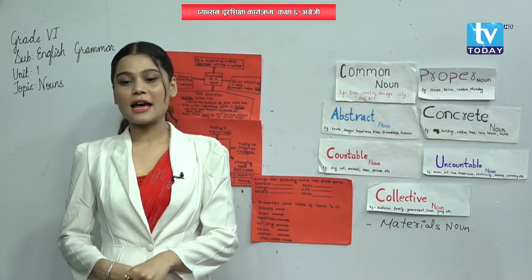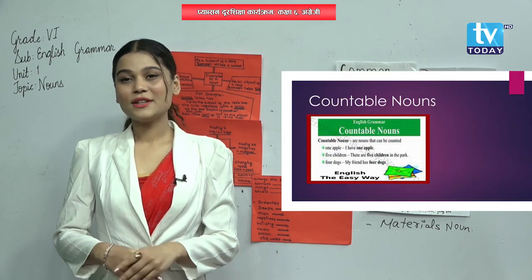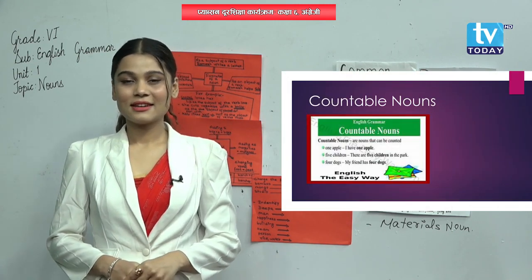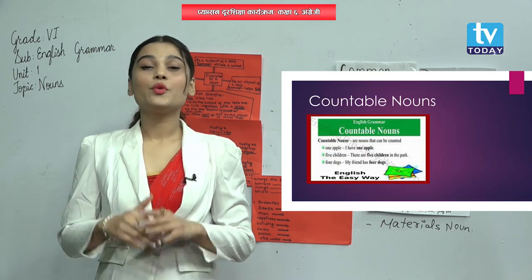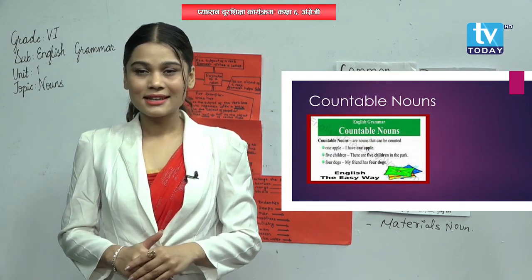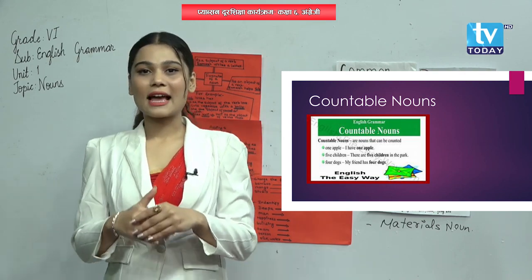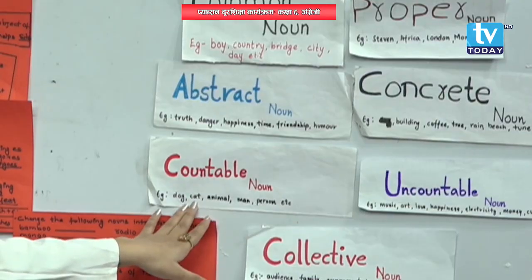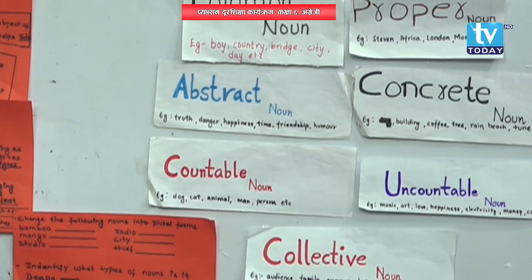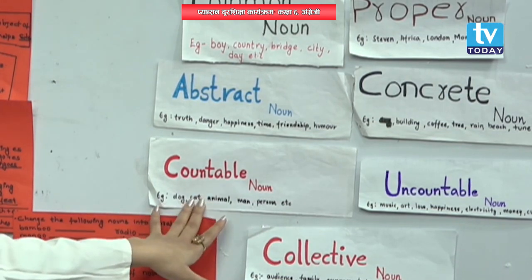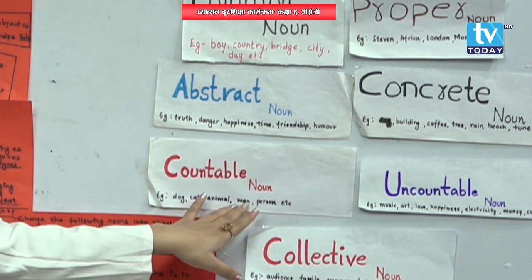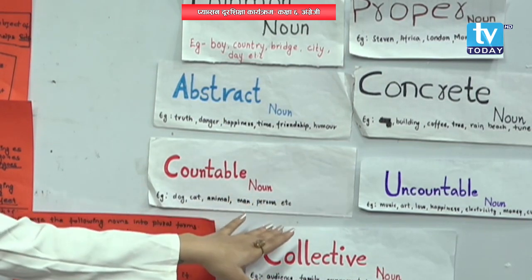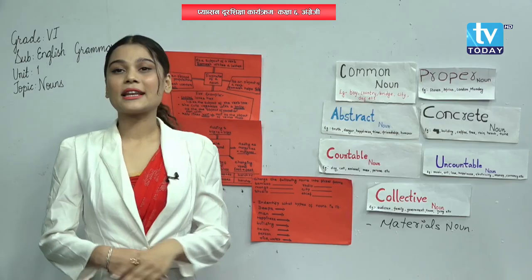Another is countable noun. What is countable noun? The noun which we can count is known as countable noun. For example, dog — there are five dogs in the garden, we can count it. Another examples: cat, animal, man, person, etc. All these things we can count, that's why they are countable noun.